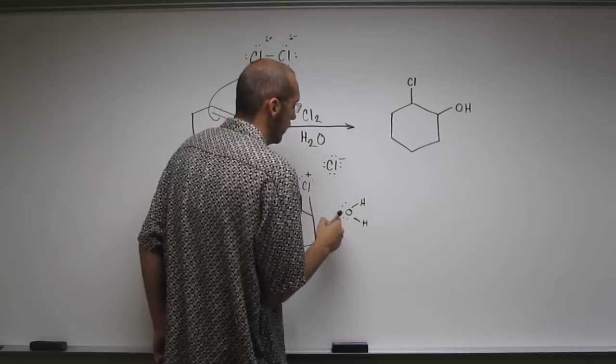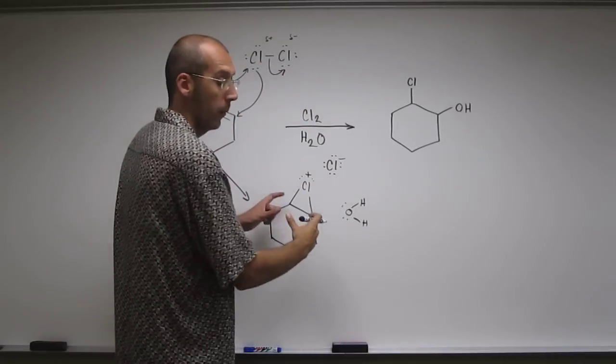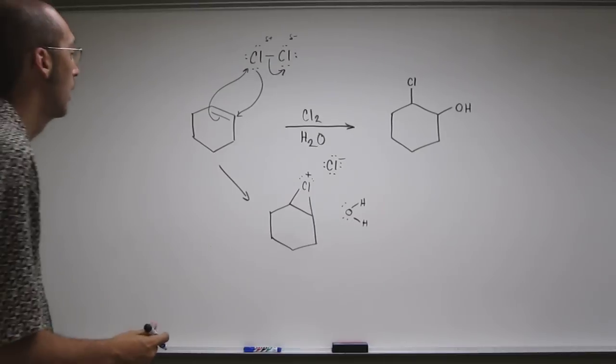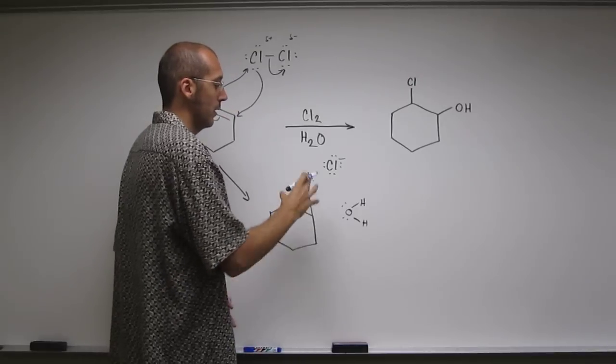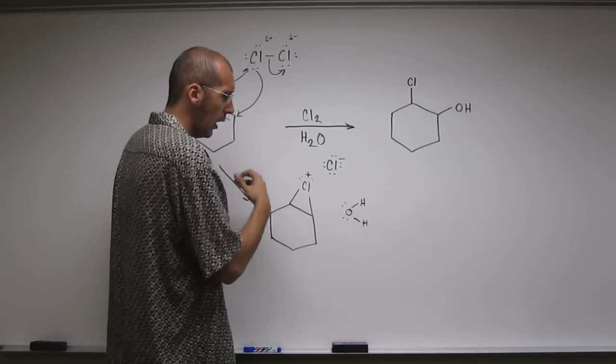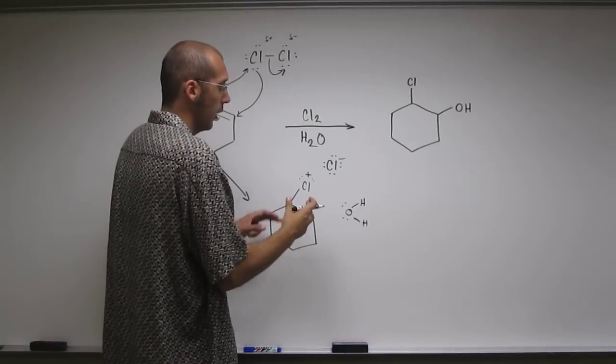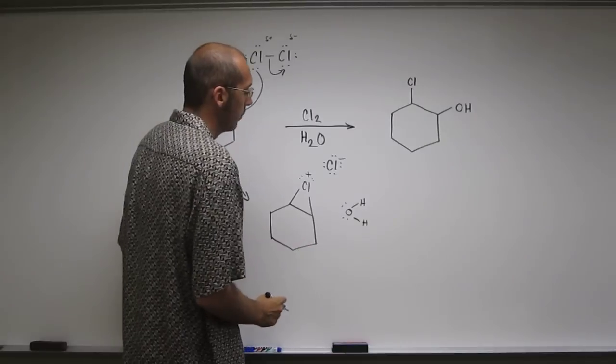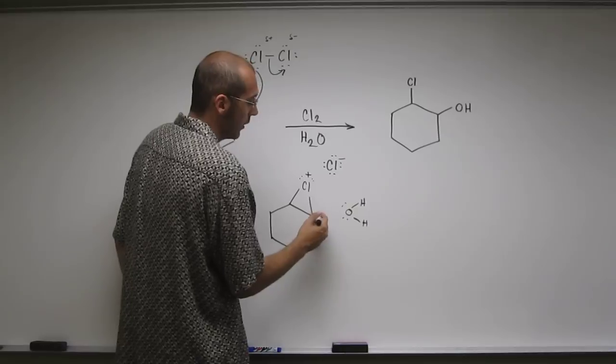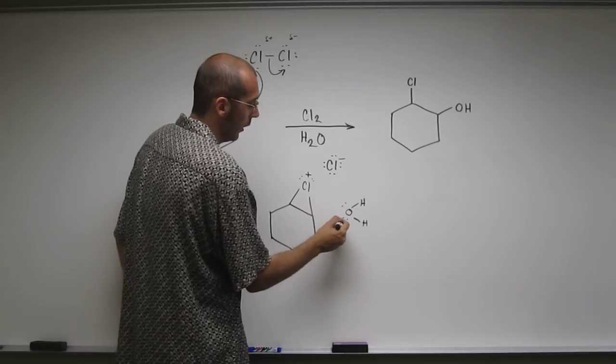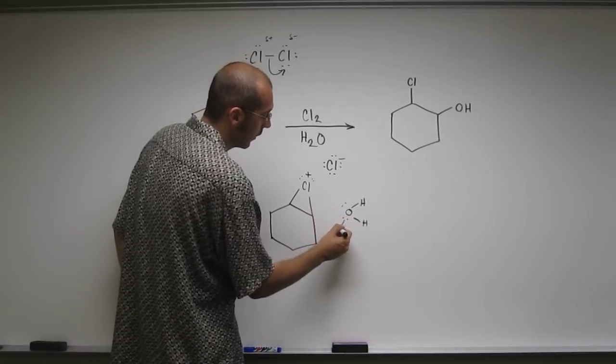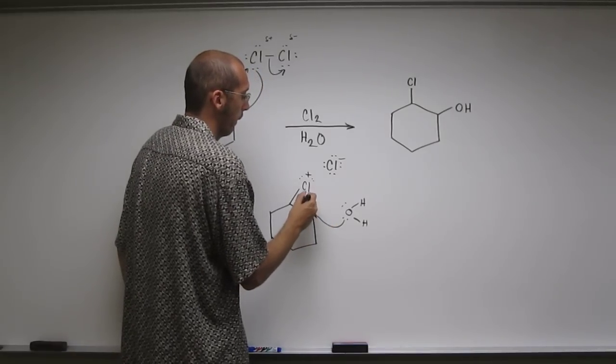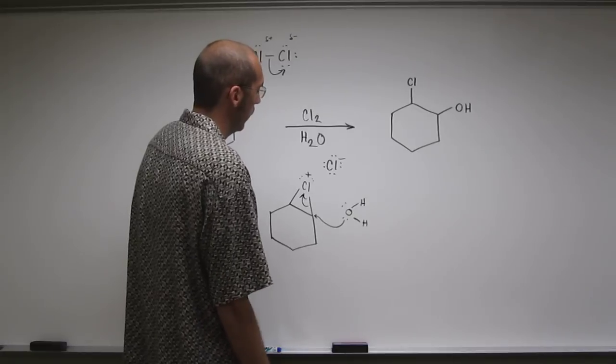So water's going to see this three-membered ring, and remember, three-membered rings are very unstable already. Chlorine being very big and bulky, and these carbons don't like having that strain on that ring. So this is going to see the opening and come in and attack, knocking that bond out like that.